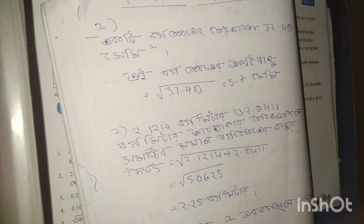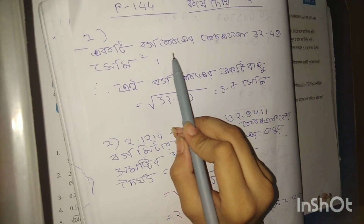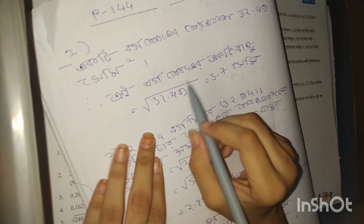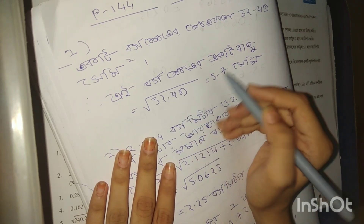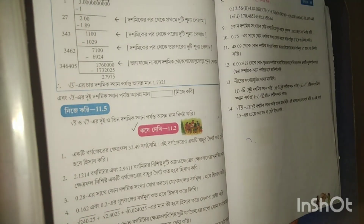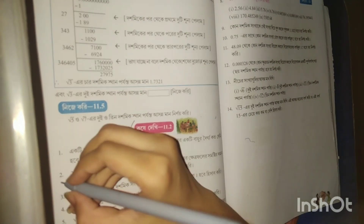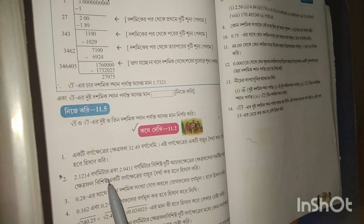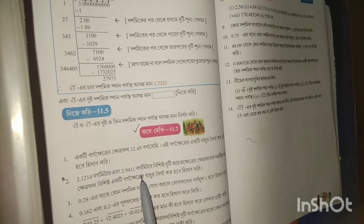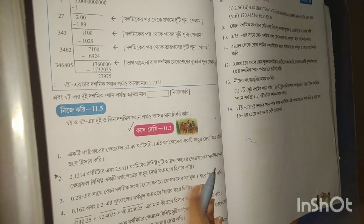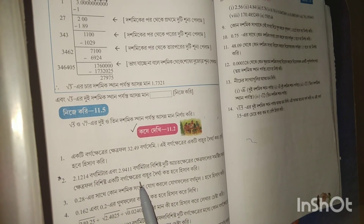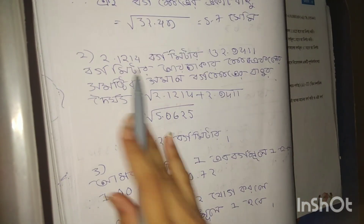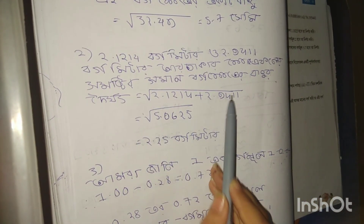This is face number 14, face number 14.49 square, and this is 5.7 Semi. 2.1214 is very important. 2.1214, 2.911, 2.911. The 2.1214 is very important.